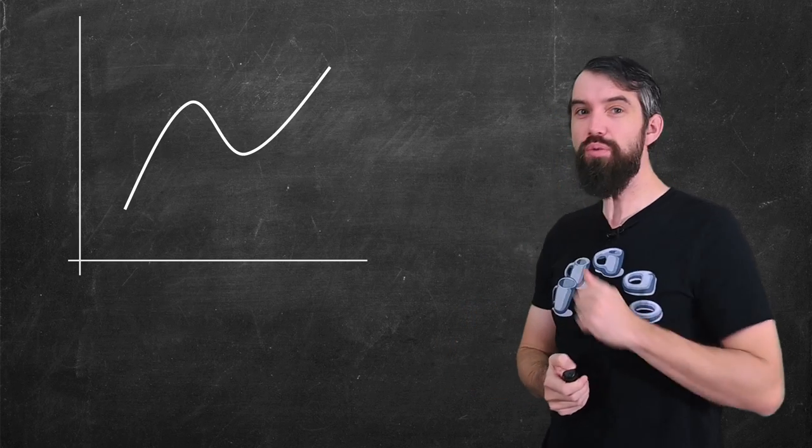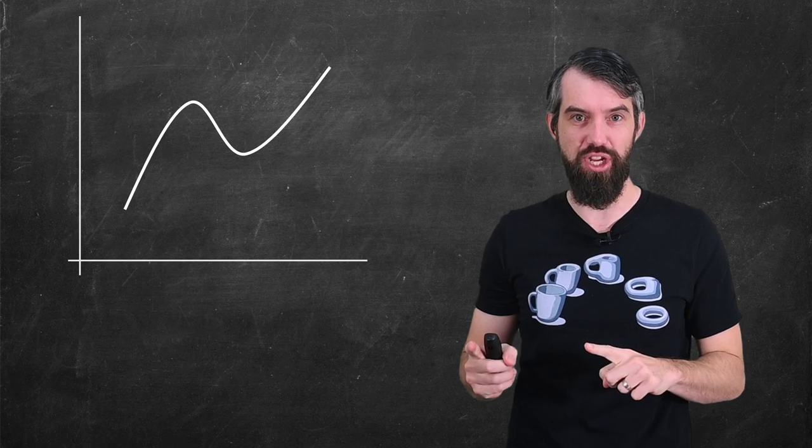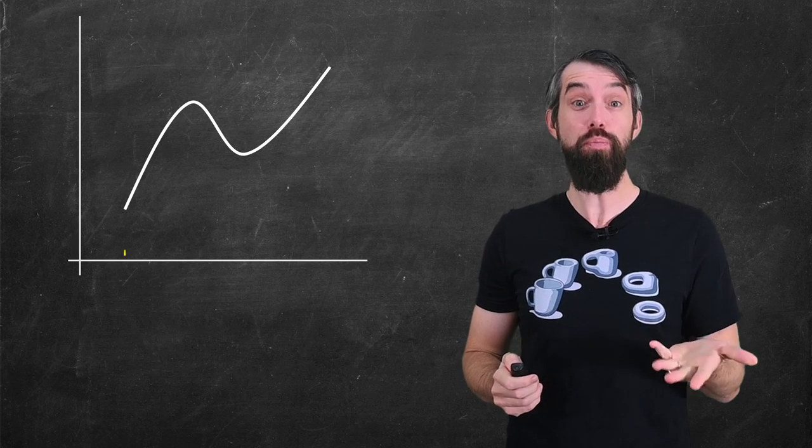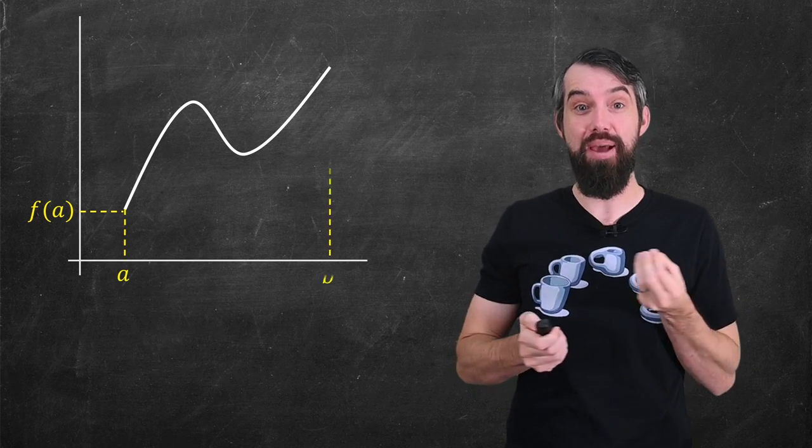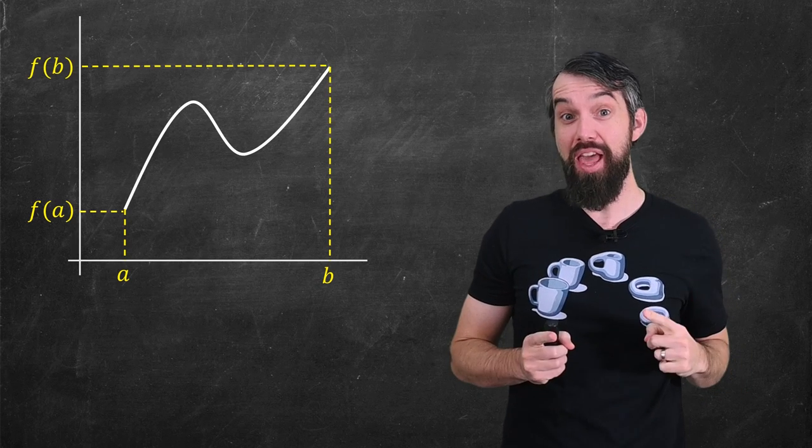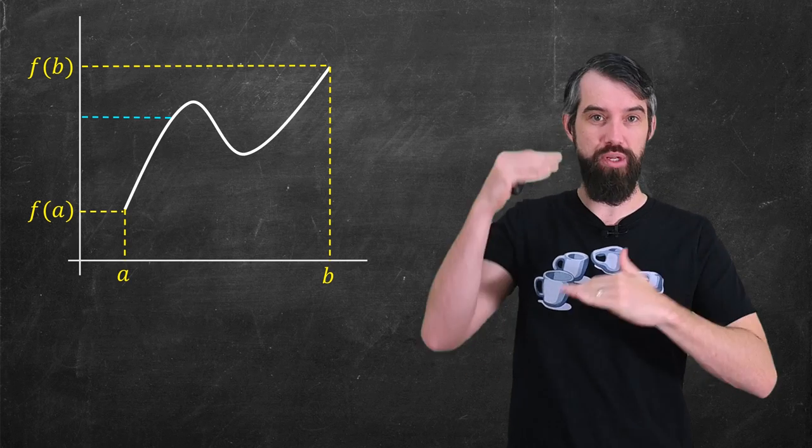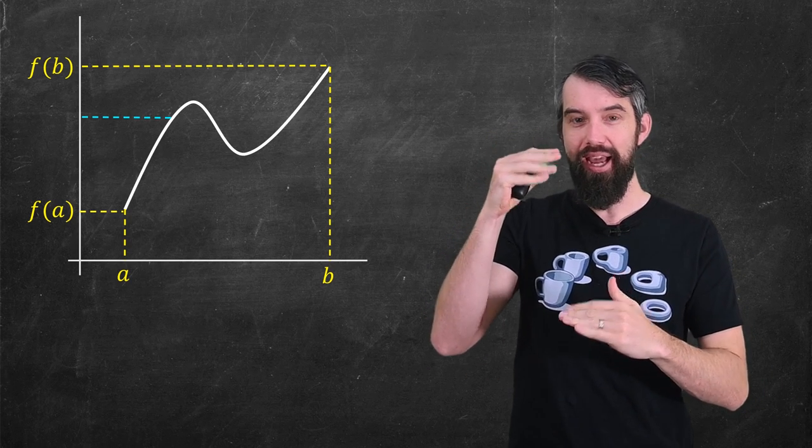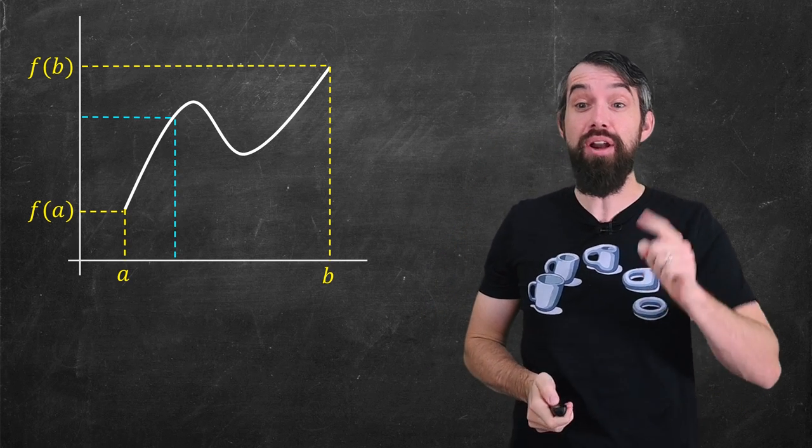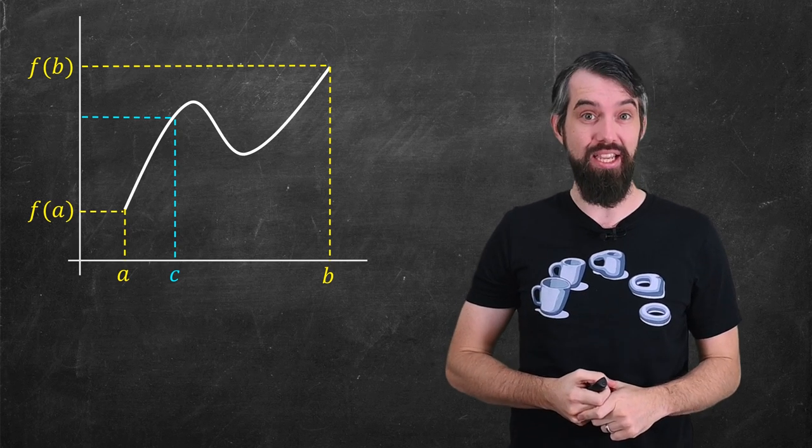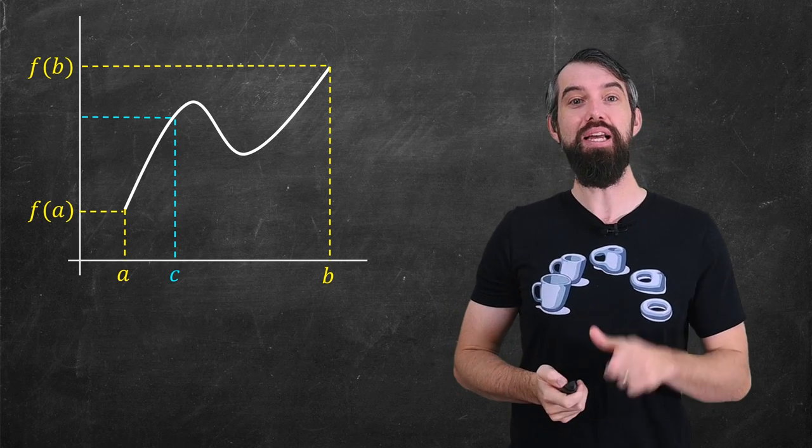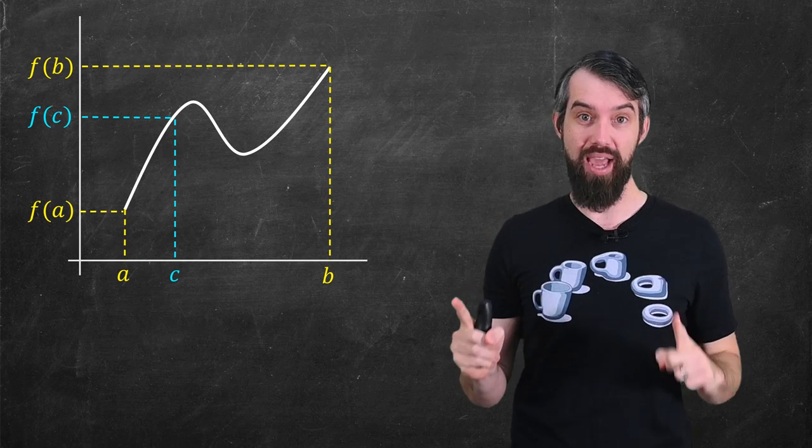The idea is that if I start with a continuous function that goes between two points, at a there's a height f(a), and at b there's a height f(b), then for any intermediate value, any value between f(a) and f(b), it's an existence theorem. It says there exists some point c, in that interval a, b, such that f(c) is that intermediate height.